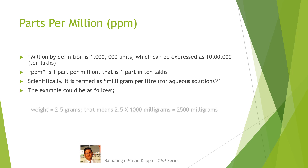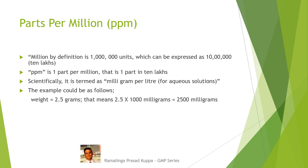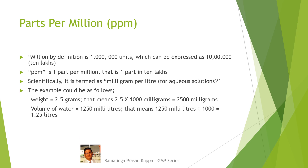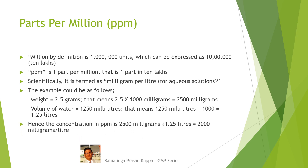The example could be as follows. Weight is equal to 2.5 grams, that means 2.5 into thousand milligrams, that is two thousand five hundred milligrams. Volume of water is 1250 ml, that means 1250 millilitres divided by thousand, that is 1.25 litres. Since the solute is required to be in milligrams, you must convert grams into milligrams. So 2.5 grams is converted into two thousand five hundred milligrams. Hence the concentration in PPM is 2,500 milligrams divided by 1.25 litres, that is equal to 2,000 PPM.